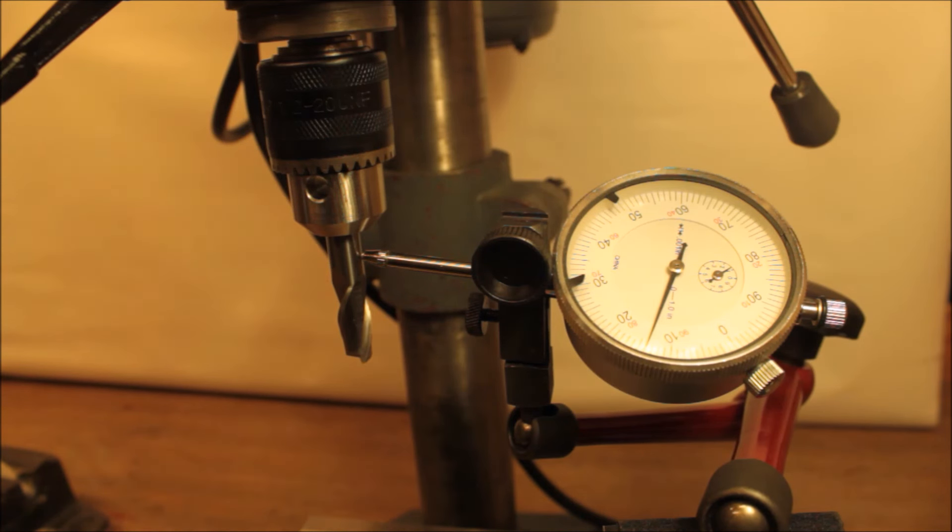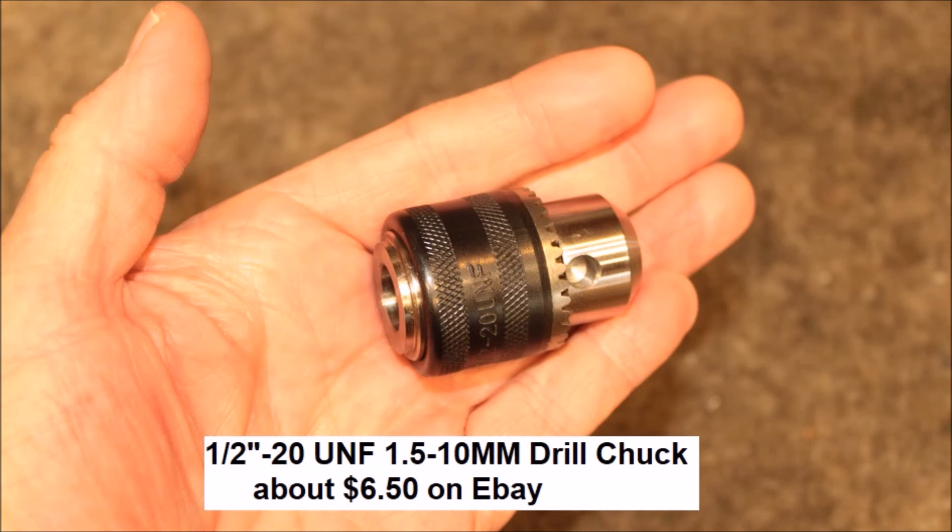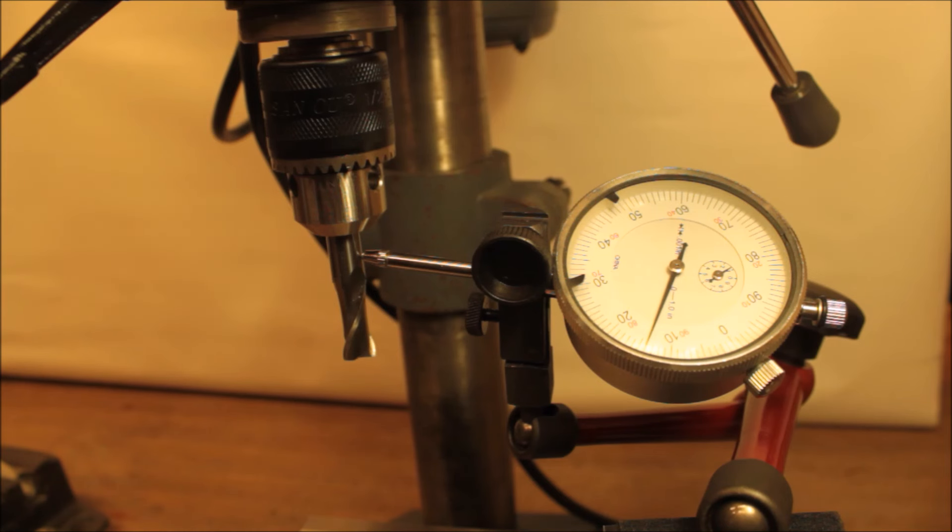Okay, let's try the runout now with just an ordinary drill chuck, very inexpensive drill chuck that cost me about five bucks. Here's a picture. Anyway, the drill chuck installed, the runout is amazingly tight - it's like less than a thousandth or maybe a thousandth.